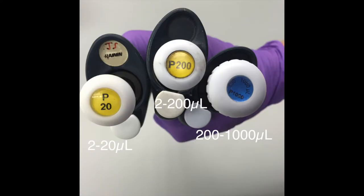There are many different sizes of micropipets, but today we will be discussing three of them. The 2 to 20 microliter pipet, indicated by the P20. The 2 to 200 microliter pipet, indicated by the P200. And the 200 to 1000 microliter pipet, indicated by the P1000.